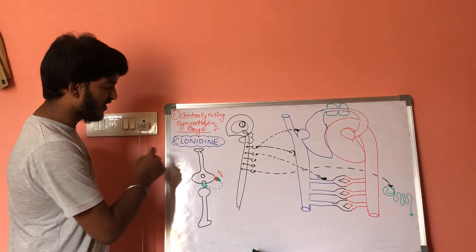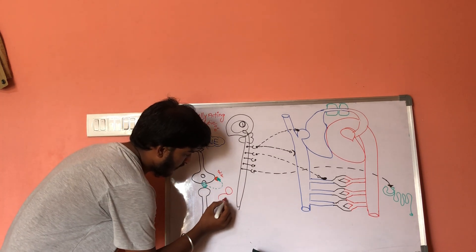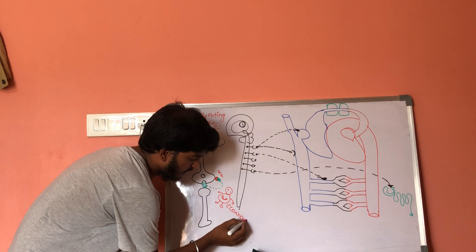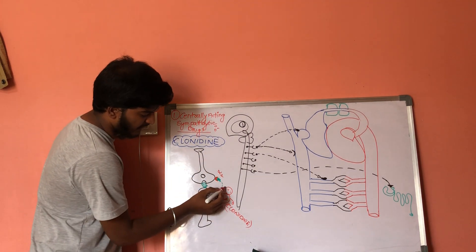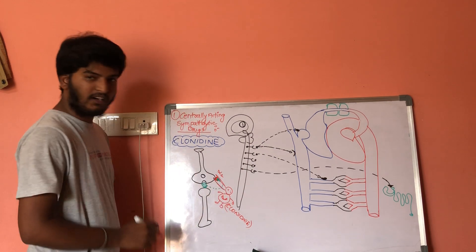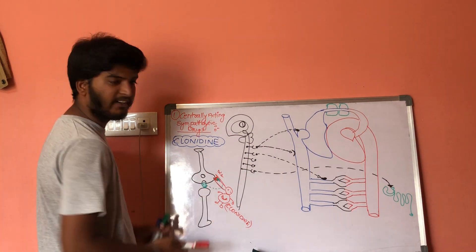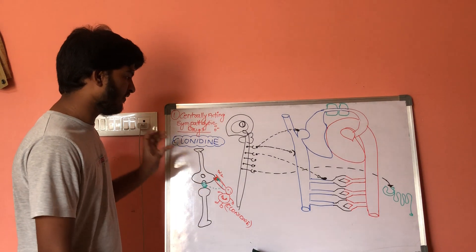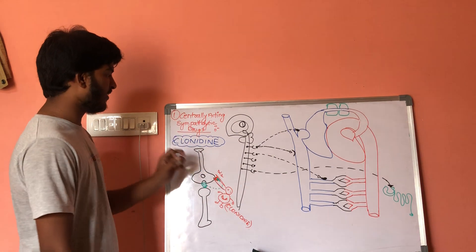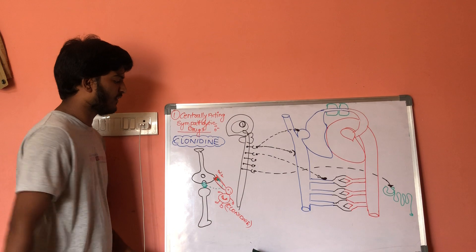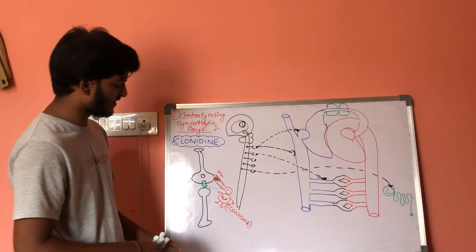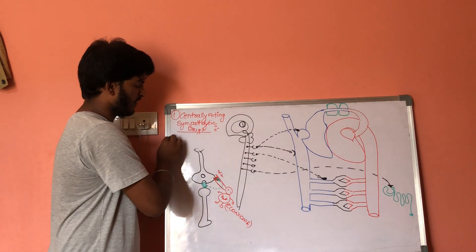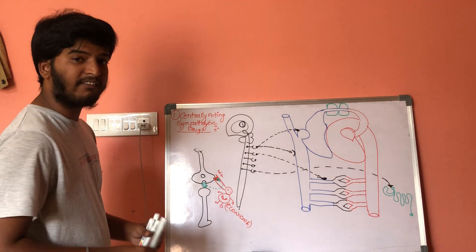Clonidine is a drug that always stimulates alpha-2 receptors. Whenever alpha-2 receptors are stimulated, G-inhibitory proteins are activated, inhibiting the synthesis and release of norepinephrine. As a result, norepinephrine action is decreased. Clonidine works as an alpha-2 agonist. This is the first drug under centrally acting sympatholytic drugs.